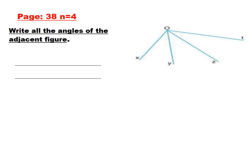Let's start with number 4 on page 38: write all the angles of the adjacent figure. As you know, in the adjacent figure I have only one vertex, which is vertex O. Let's start with the first angle.